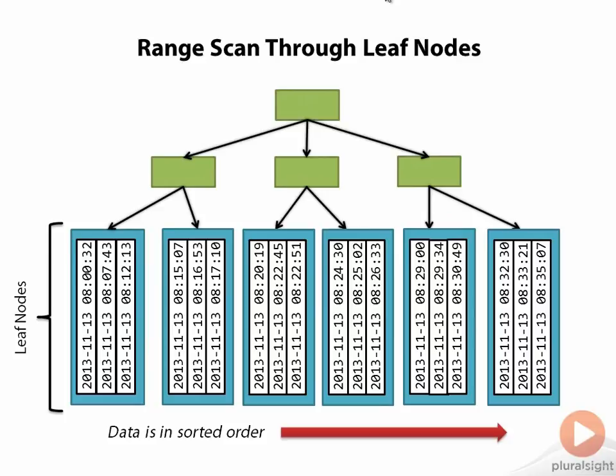If you think about an index on a date column, which is the example shown here, you might have a query which is specifying a date-time range. What Oracle will do is traverse the index vertically to find the leaf node with the first date in the range, and then scan through the leaf node sequentially until it finds the last date-time in the date range.